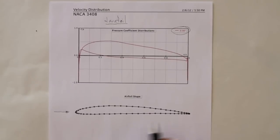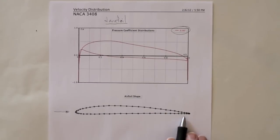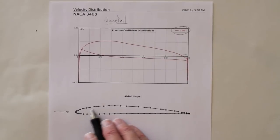Now at zero angle of attack we still get lift from this airfoil because it's got a little bit of camber, a little bit of curvature. The top goes up and the bottom is relatively flat.